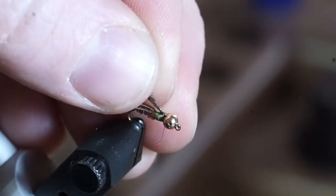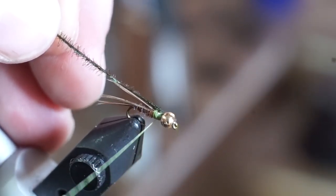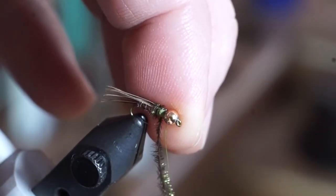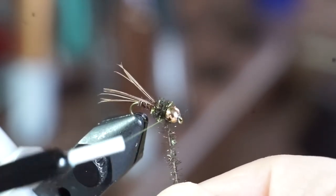Now take a single strand of peacock hurl. Use 2 or even 3 if you're tying a larger bug and capture the end of the abdomen. Now make touching wraps with the peacock hurl up until you reach the bead head. Then capture it and break off the waste.